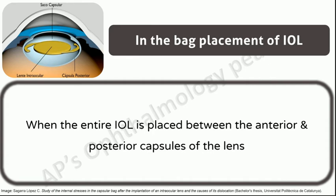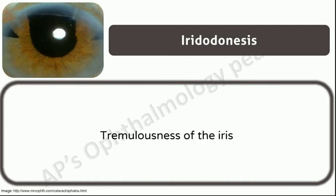In-the-bag placement of IOL: when the entire IOL is placed between the anterior and posterior capsules of the lens. When there is a posterior capsule rent, the IOL cannot be placed in the bag. The options are: for a posterior chamber IOL — sulcus fixation, scleral fixation, glued IOL, and posterior iris claw lens; and for anterior chamber lenses such as anterior iris claw and iris-supported lenses such as the Kelman multiflex lens. Iridodonesis: tremulousness of the iris, seen in aphakia, hypermature sclerotic cataract, subluxation, and dislocation of the lens.